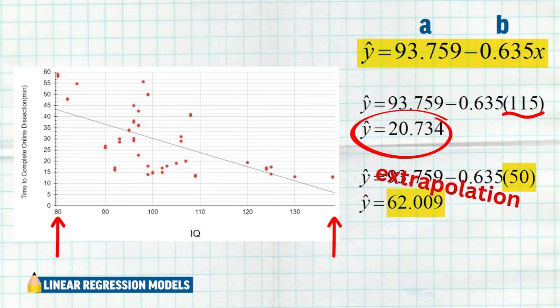Trying to make a prediction for an IQ score outside of that range is not trustworthy, and that's why it's called extrapolation and it's not recommended. Now again, notice that there was nothing stopping me from doing it. I plugged 50 in, I got a number, but because 50 was not in the range of my explanatory variables for my data, I would not trust this value. It might not be very trustworthy or a very good estimate. So that's what extrapolation is, trying to make a prediction for something outside of your range. I'll say one more time, you could do it, but it's not recommended.